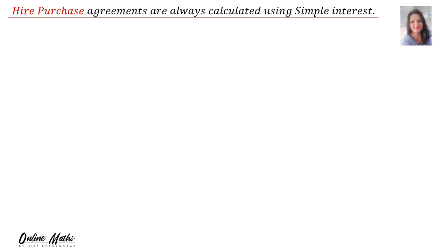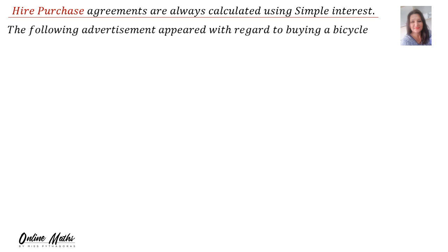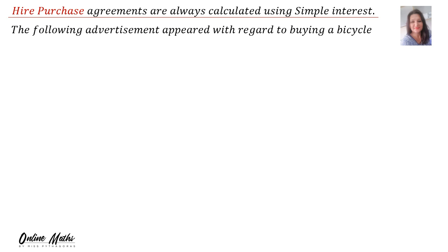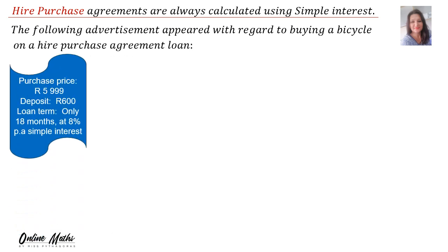Hire purchase agreements are always calculated using simple interest. Now let's look at an example. The following advertisement appeared with regard to buying a bicycle on a hire purchase agreement loan. The purchase price is R5,999, the deposit is R600, the loan term is only 18 months at 8% per annum simple interest.